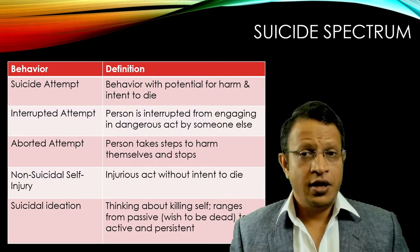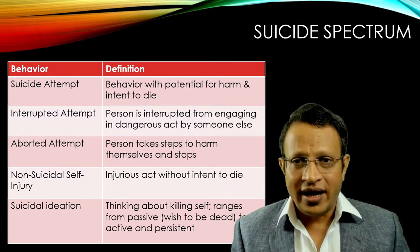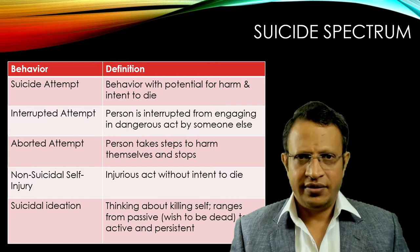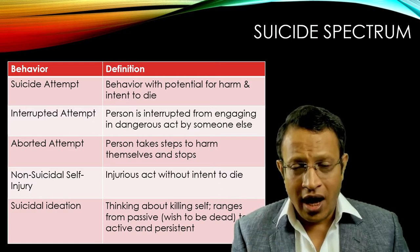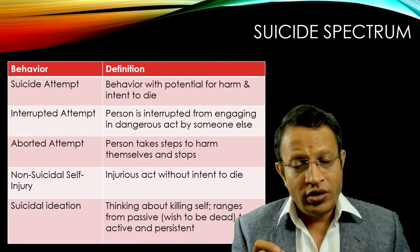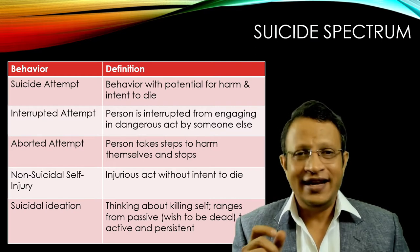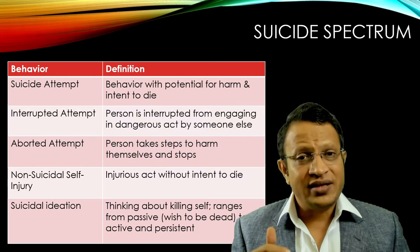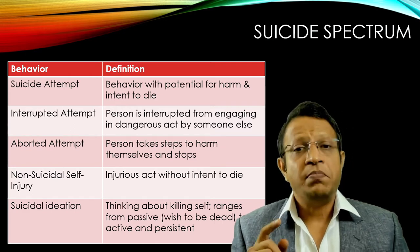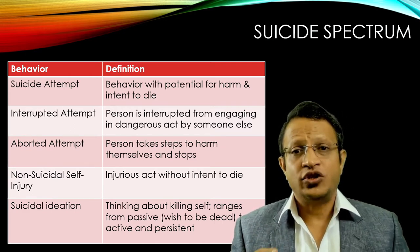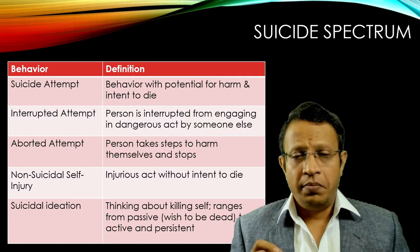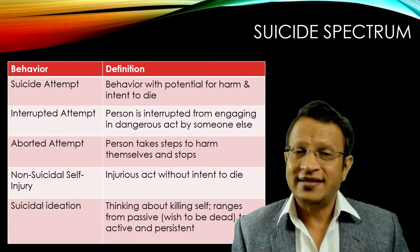Let us look into the various definitions, because we need to be on the same page. What do you mean by suicide attempt? It is a behavior with a potential for harm and intent to die — a person intends to die and depicts that through an act of killing himself. What is an interrupted attempt? A person is interrupted from engaging in a dangerous act of killing himself by someone else — a third party interrupts. That is called an interrupted attempt.